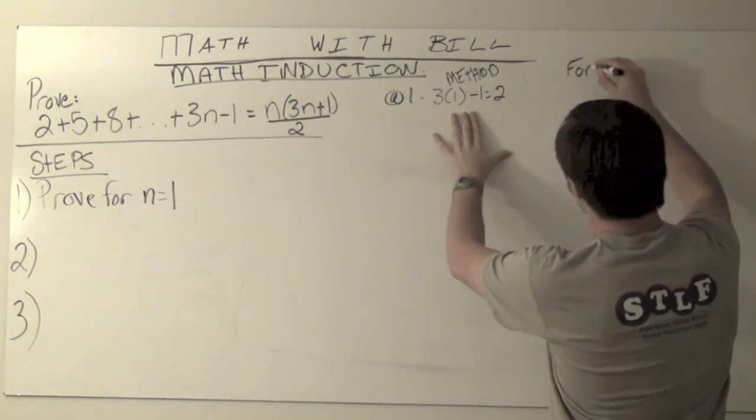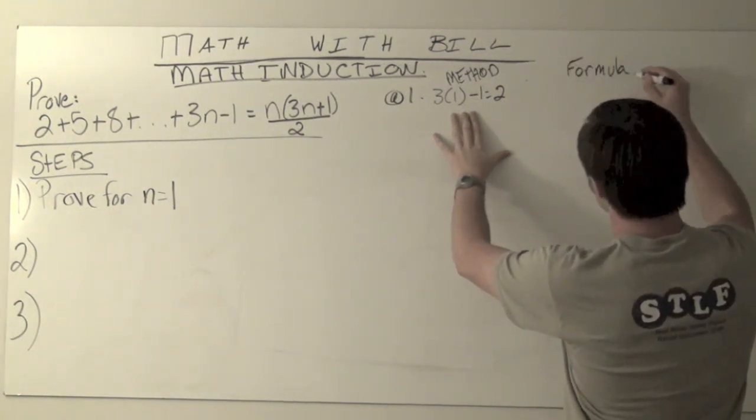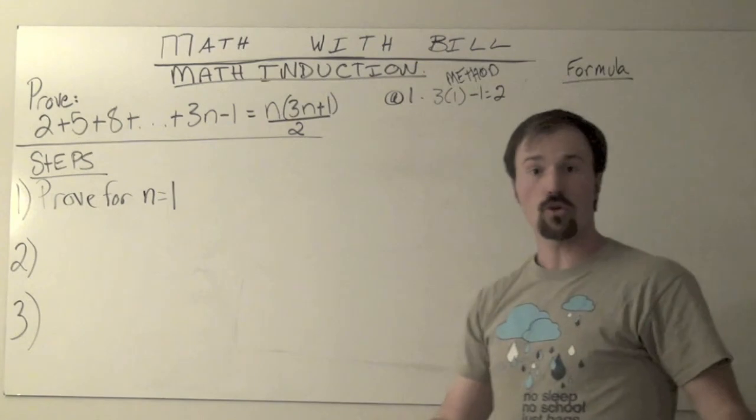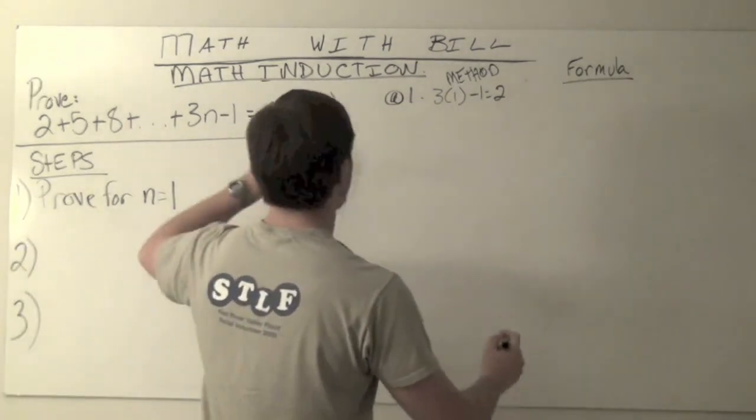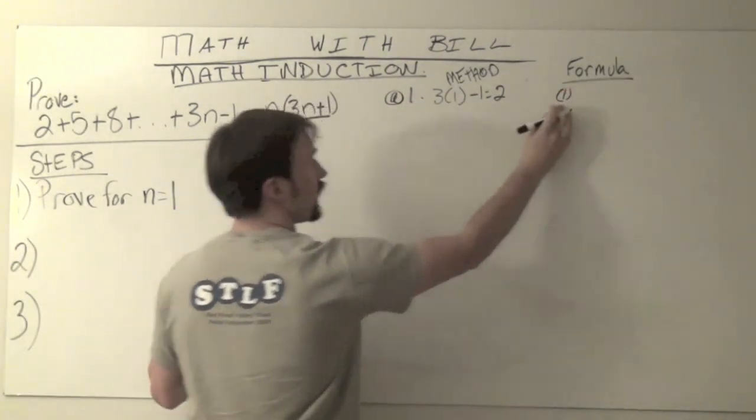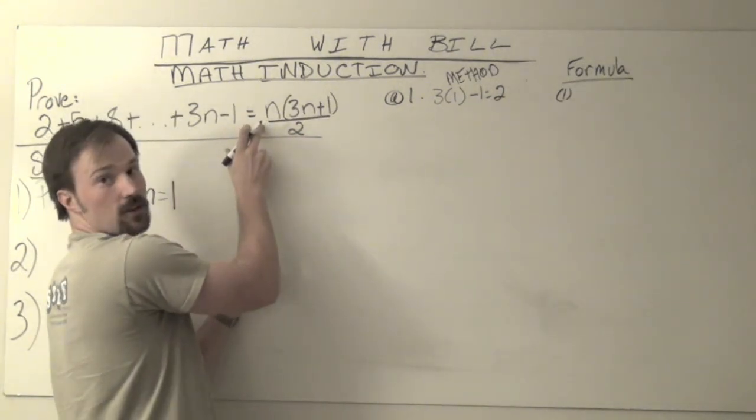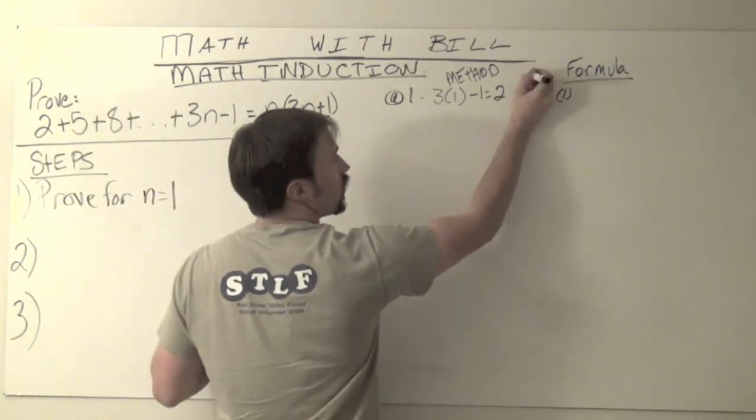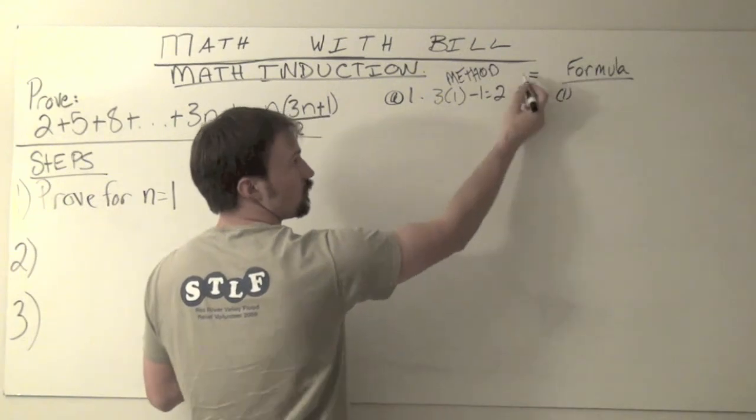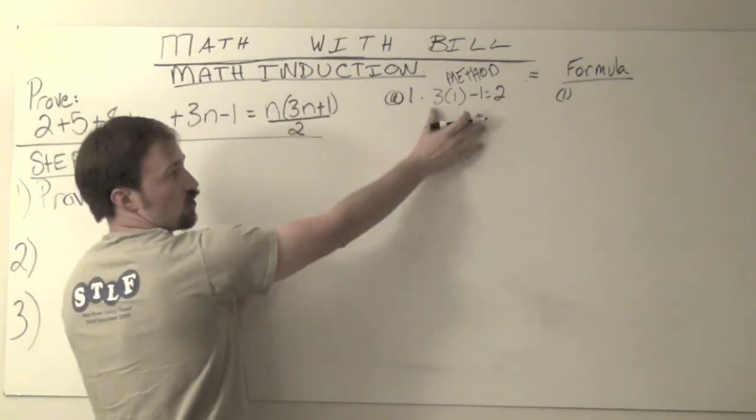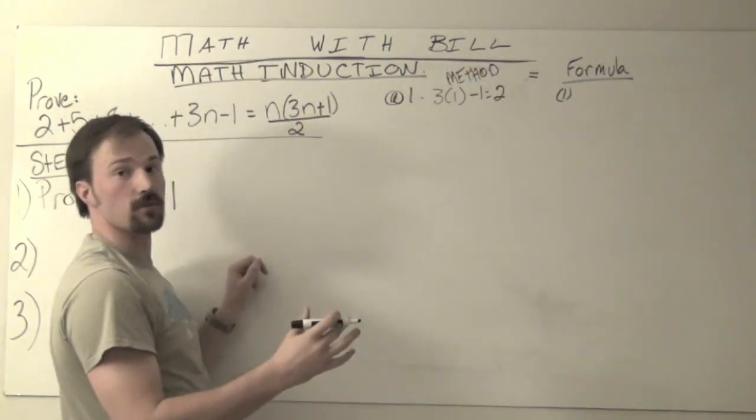Now let's check that against the formula. Our formula over here says that we should be able to substitute in 1, and now I'm taking directly from this side of the equation. So this method should be equal to formula. On one side we'll use all of the method, on the other side we'll use all of the formula.